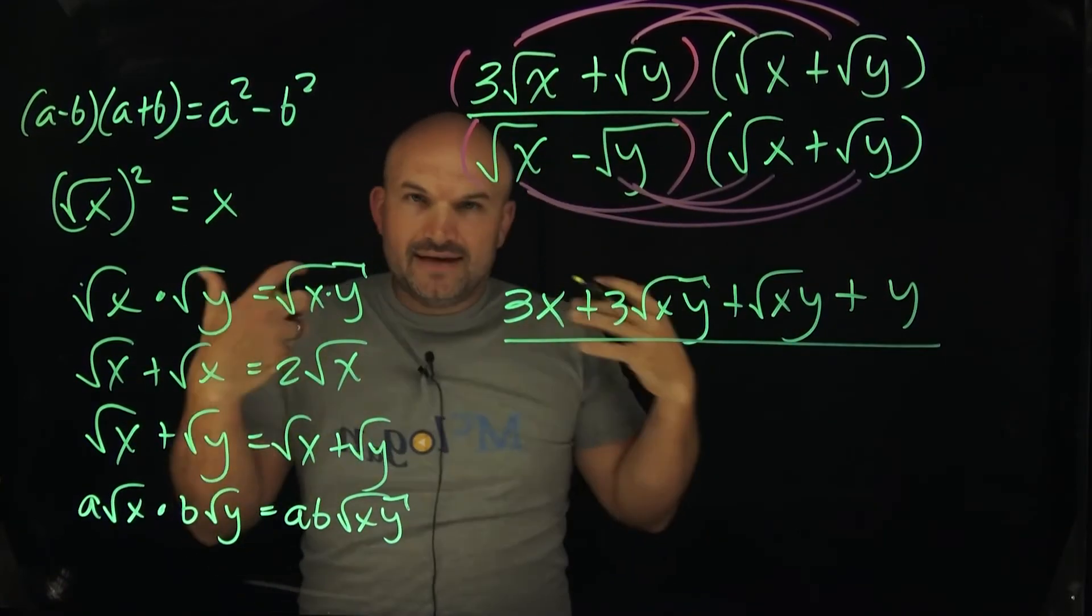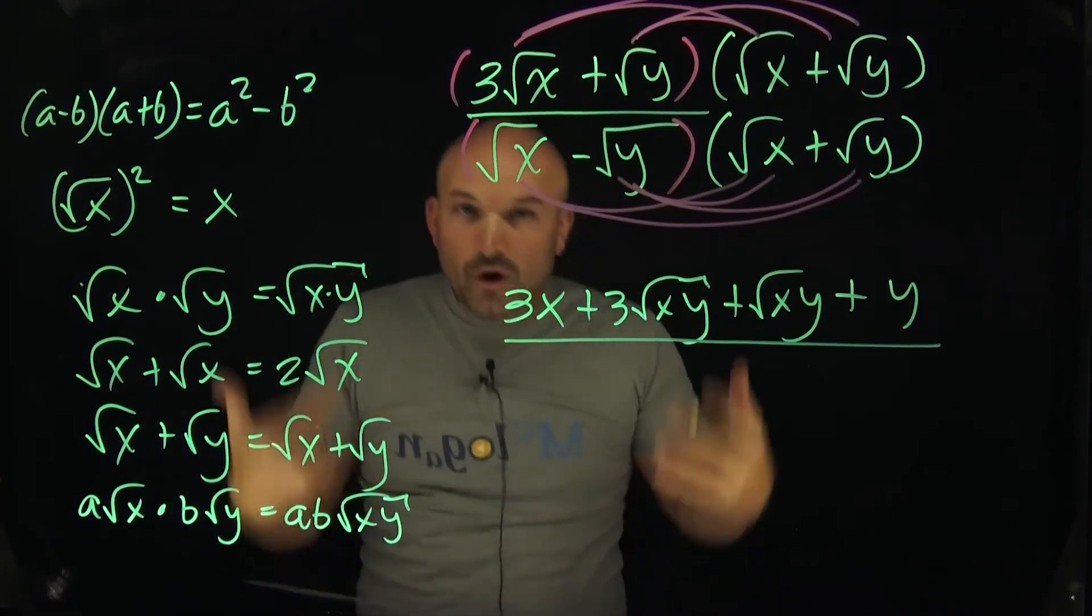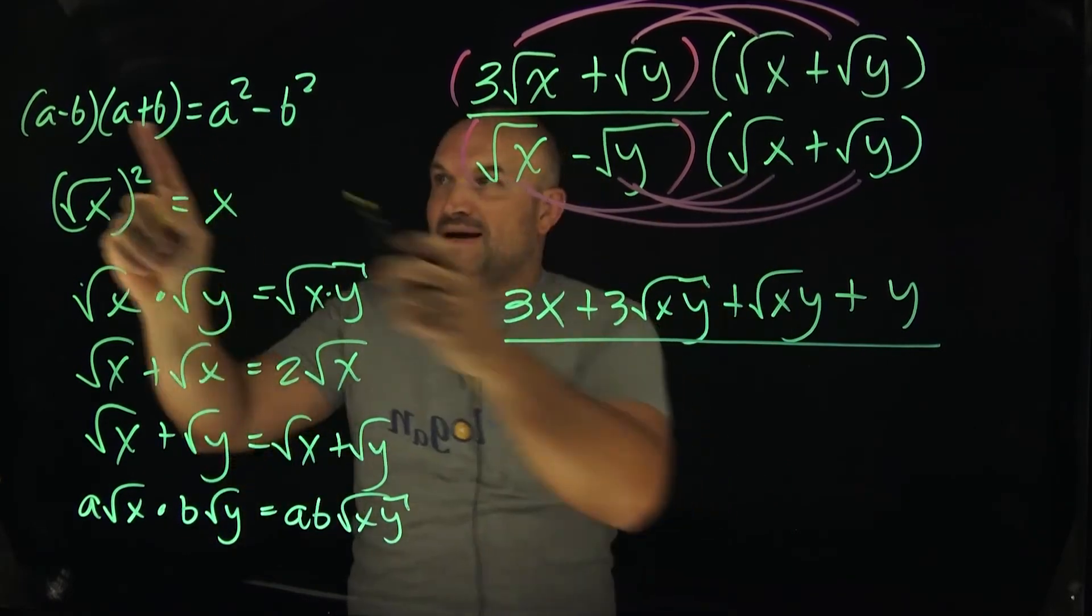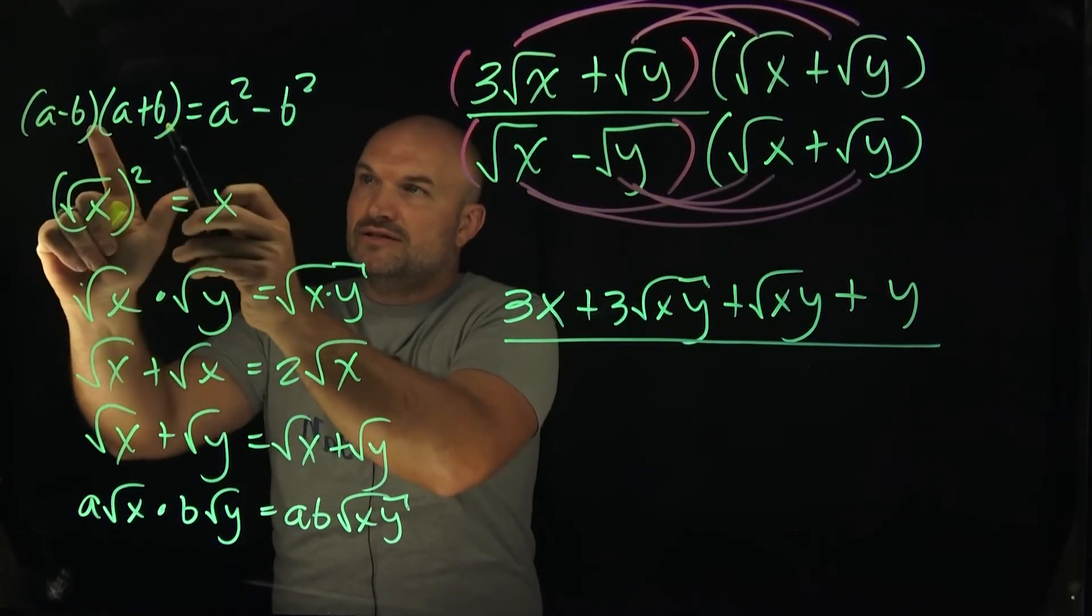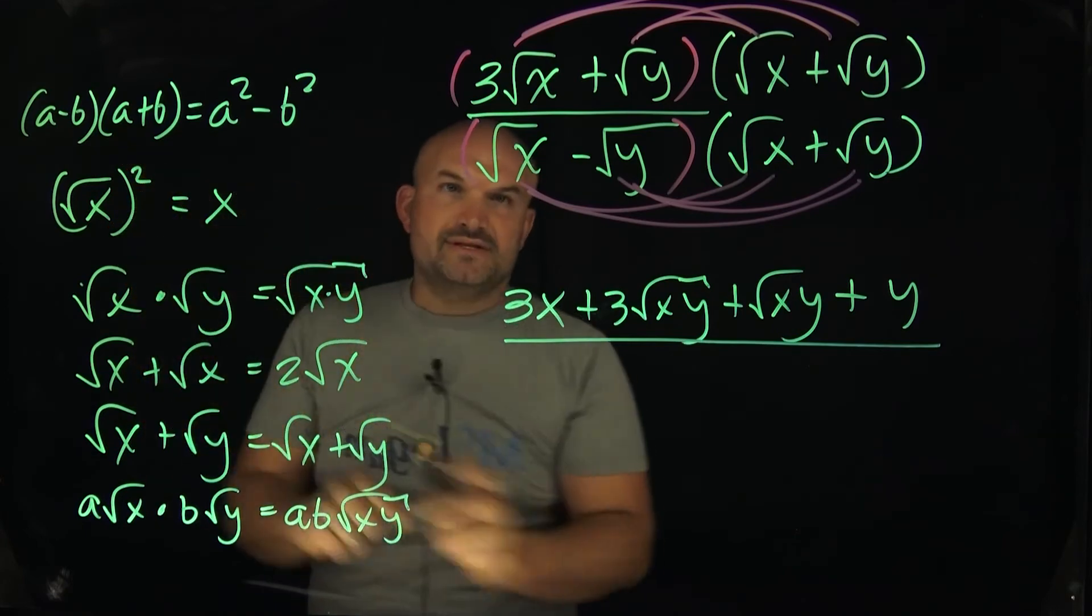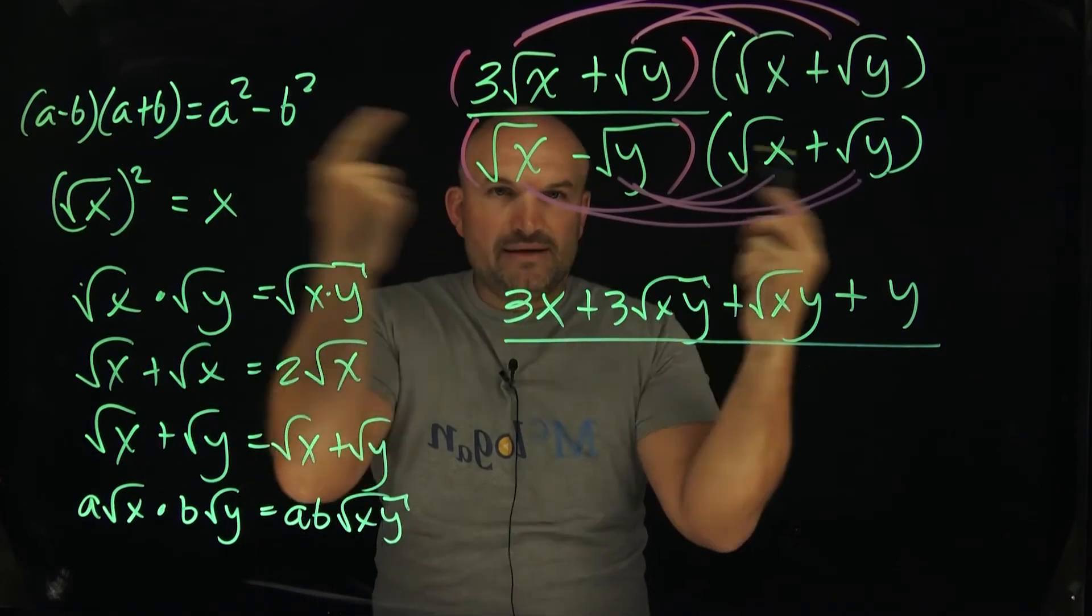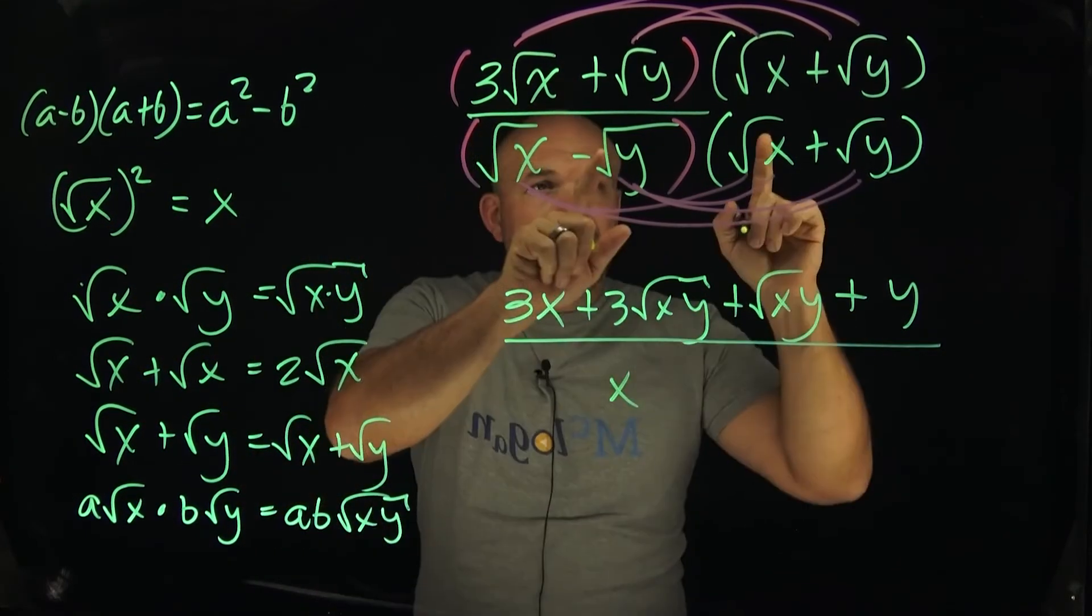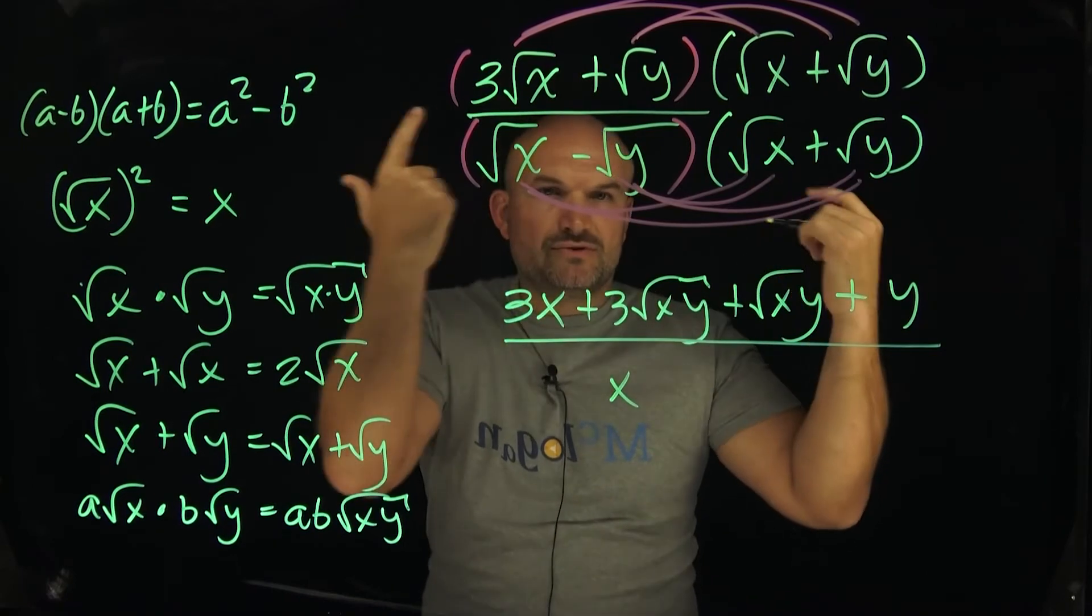And now my denominator. You can multiply this out if you want to, or you can recognize the difference of two squares. You're basically just squaring the first two terms, a squared, squaring the last two terms, b squared, and then you have the difference between them. So the square root of x times the square root of x is going to be square root of x squared, which is going to be x. And then here, I have square root of y times square root of y, which is going to be y.